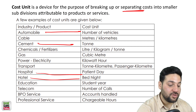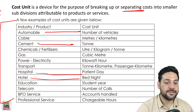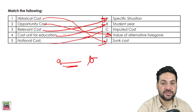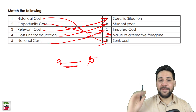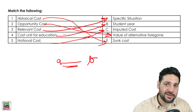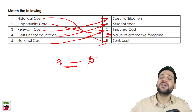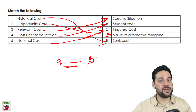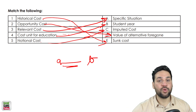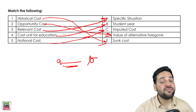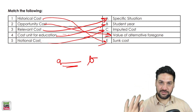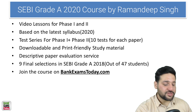Cost unit for education is student per year — please remember that. And notional cost — that is an imputed cost. For example, if you own a building at a prime location but keep your office there instead of renting it out to a showroom, you are losing that potential rental income. That loss is the notional cost. Notional cost is not expressed in financial statements but it is still there.